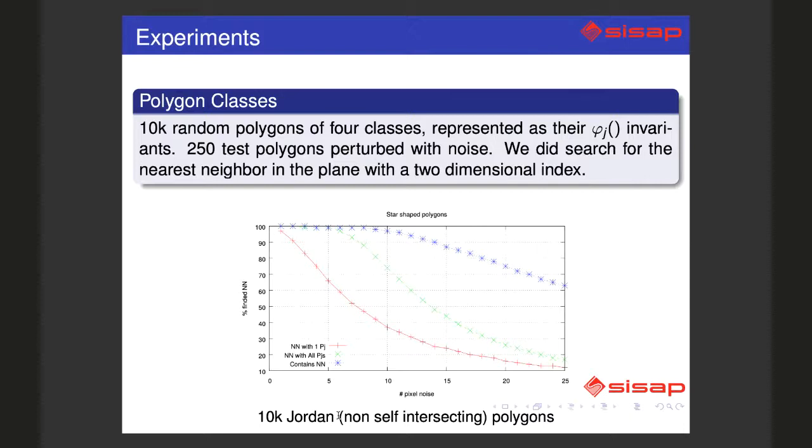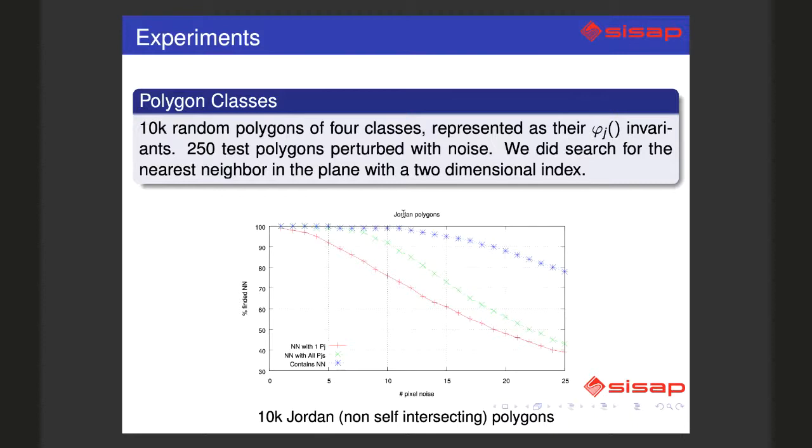This is star-shaped polygons. But this is the fourth time I've given this talk, so bear with me. In this experiment, the Jordan polygons are much more resistant to noise, up to say 12 pixels.